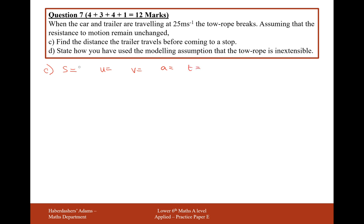We want to calculate the distance travelled. We know our initial speed is 25, our final speed is going to be 0, and we're going to need one of these other two, A or T. I think we're going to need A, and we'll have to work this out using another F equals ma.